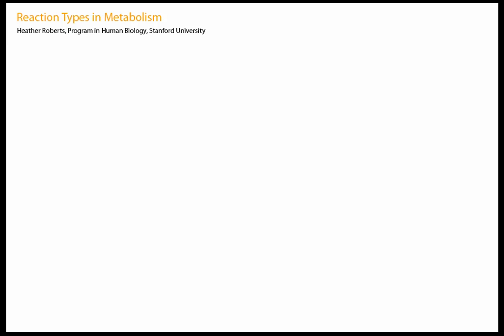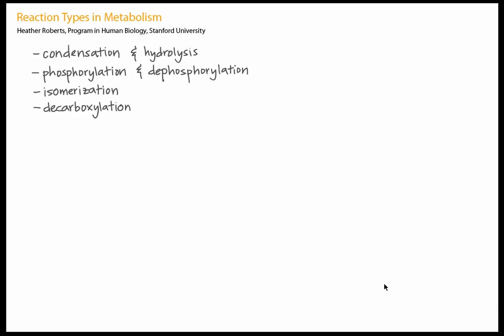In the metabolism unit, we've seen a lot of different types of reactions. One is familiar, the condensation reaction, which we've seen in the context of glycosidic bonds and peptide bonds. In this tutorial, we'll review the condensation reaction and discuss the other major classes of reactions seen in metabolism: hydrolysis, phosphorylation and dephosphorylation, isomerization and decarboxylation. Redox reactions are also central to metabolism, and they're covered in the Redox Reactions in Metabolism tutorial.